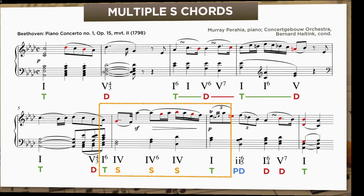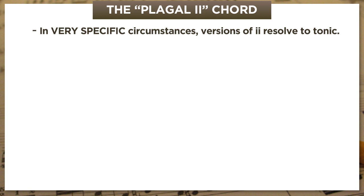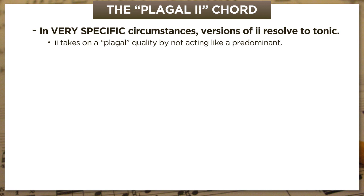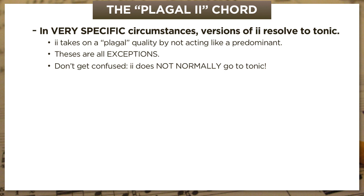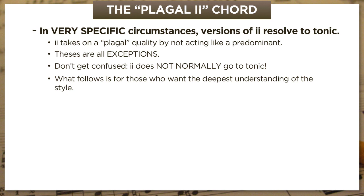Now we switch gears to talk about the rare cases where II, not IV, takes on a subdominant function. This only happens in very specific circumstances—it's contextual. II takes on a kind of plagal quality when it doesn't act like a predominant. But I want to stress: these are exceptions. Don't get confused and start thinking that II can just go to tonic whenever it feels like it—it can't. Everything from this point forward is specifically for people who like to geek out on the fine print and want a deep understanding of how the style works.